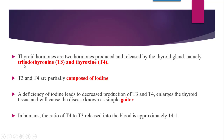The name iodothyronine indicates that T3 and T4 are composed of iodine. The tyronine residue plays an important role in synthesis. As seen in the structure, tyrosine residues are connected together, and on those residues you find iodine. For T3 there are 3 iodines, and for T4 there are 4 iodines.